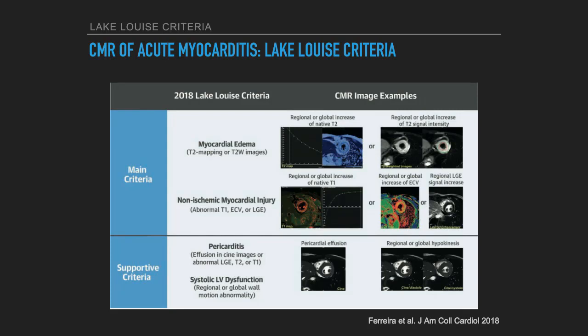The published Lake Louise criteria define the parameters acquired by a cardiac MR scan to verify inflammation and specifically acute inflammation. There are two main criteria: first, is there evidence of increased water content in the heart consistent with acute inflammation (edema); and second, is there irreversible injury evident by T1 maps or late gadolinium enhancement. Supportive criteria include pericarditis or pericardial effusion, and dysfunction. These criteria have been validated with very good diagnostic accuracy, and cardiac MR is considered the non-invasive gold standard for verifying or refuting acute myocarditis.